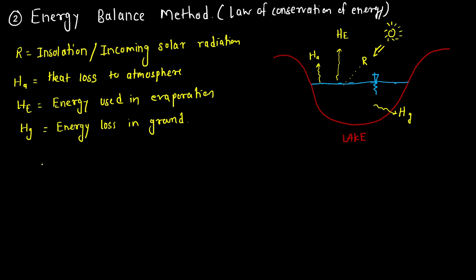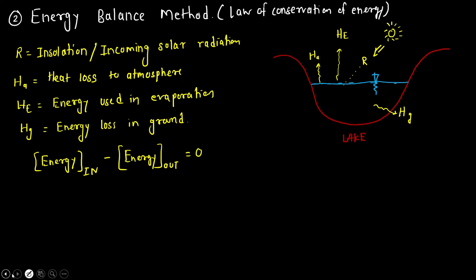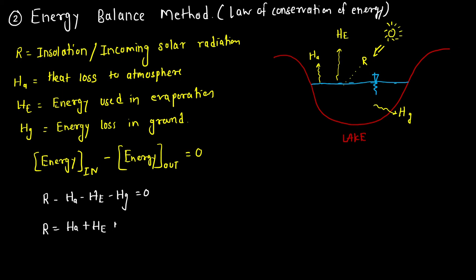Since total energy is constant, we write: inflow of energy minus outflow of energy equals zero. Substituting values: R (incoming) minus Ha minus He minus Hg equals zero, which gives R = Ha + He + Hg. This is the first equation obtained from the energy balance method.